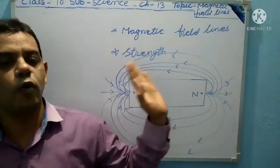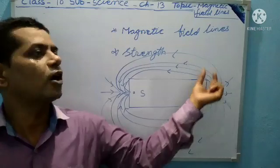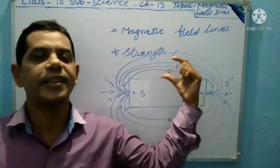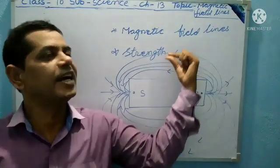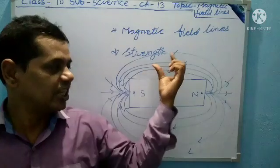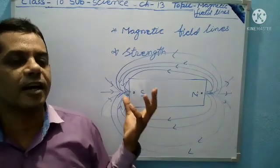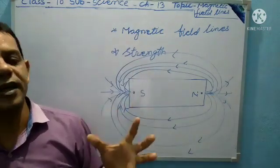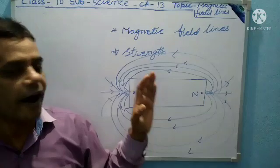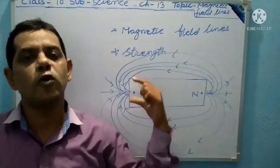The magnetic lines of force are crowded near the poles — both North pole and South pole have crowded magnetic lines. At the middle, the lines are far apart and the field strength is weaker. At the poles, the strength is very high; the magnetic field is strongest at the North and South poles, and the lines are far apart near the middle.